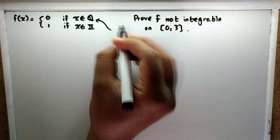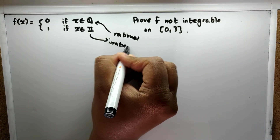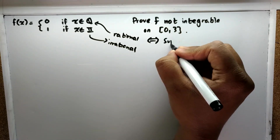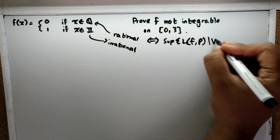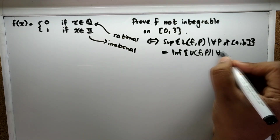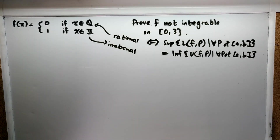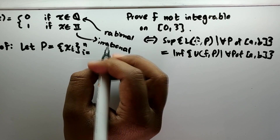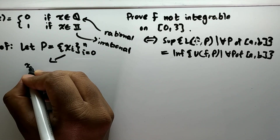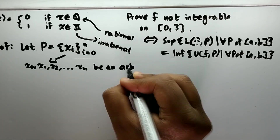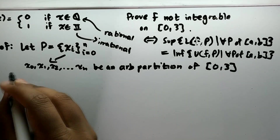For example, consider f(x) equal to 0 if x is rational and 1 if x is irrational. We are asked to prove that it's not integrable on [0, 3]. To show this, we have to prove that the supremum of all the lower sums for the partitions of [0, 3] is not equal to the infimum of the upper sums. We pick an arbitrary partition P, written as {x_0, x_1, ..., x_n}, and it is very important that this partition is arbitrary.